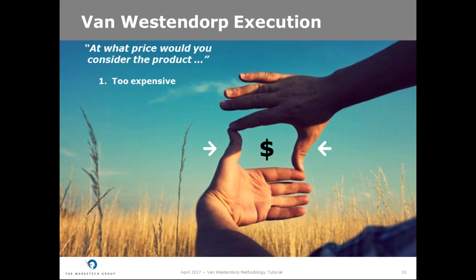At what price would you consider the product too expensive and you would not consider buying it? Second, at what price would you consider the product to be so inexpensive that you would doubt its quality and would not consider buying it? Third, at what price would you consider the product to be getting expensive but you would still consider buying it? And at last, at what price would you consider the product to be a bargain and a great deal for the money? We recommend this order so that the customer starts by setting the upper and lower limits of acceptable prices, and then it is easier to pick expensive and bargain prices within the range he has just defined.